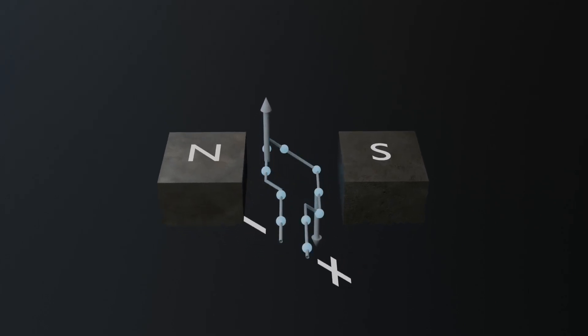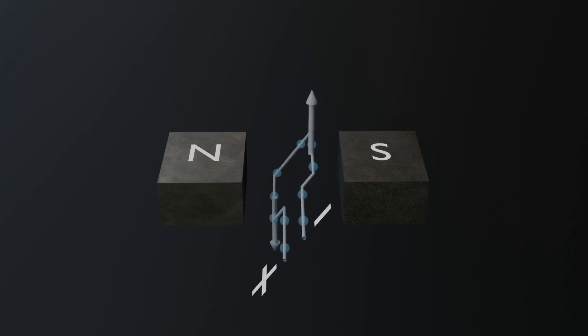However, this setup has a few problems. First, once the coil rotates 90 degrees, the direction of the force changes. Instead of continuing the rotation, the forces will try to push the coil back in the opposite direction. This would result in an oscillatory motion, where the loop keeps rocking back and forth rather than completing a full rotation.